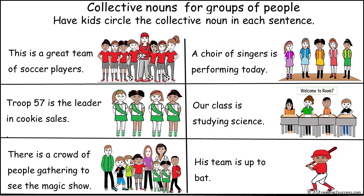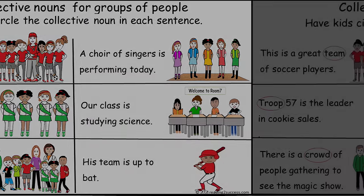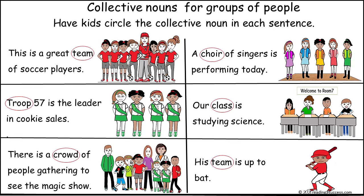For this activity, have kids read each sentence, or read each sentence with kids, and then have them circle the collective noun in each sentence. It is fine if they need to look at the chart to complete this activity. This is a completed example. In our first sentence, 'This is a great team of soccer players' — team is the collective noun. In our second sentence, 'Troop 57 is the leader in cookie sales' — troop is the collective noun.